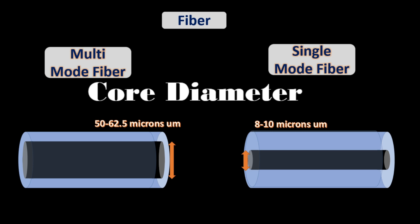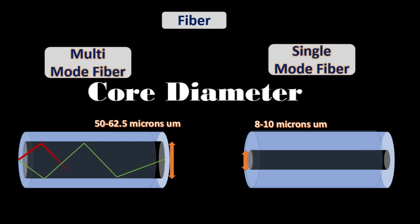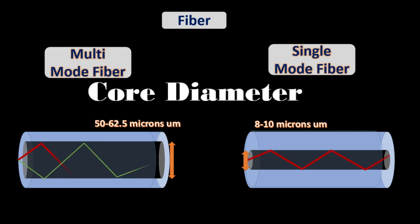That's the reason: as multi-mode fiber's core diameter is relatively big enough for light, it allows light to travel through in multiple line spreads at the same time and at various reflection angles. In single-mode, light travels in one path.